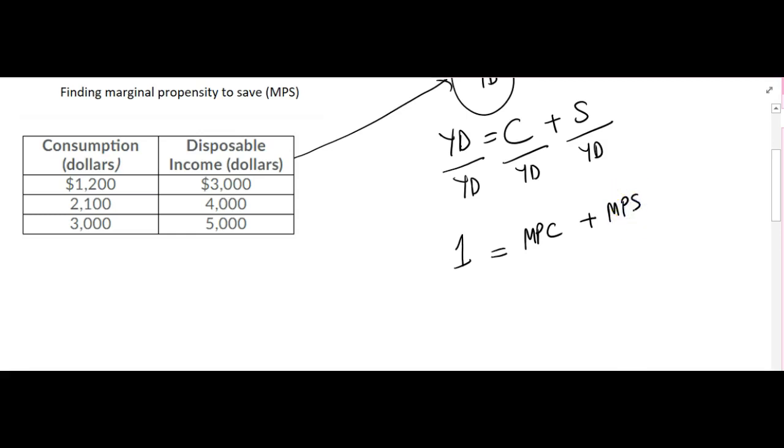So the question is asking about finding marginal propensity to save. How we're going to do that, we're going to use this identity and solve for MPS. What we're going to do is find out marginal propensity to consume and 1 minus that amount will give you the marginal propensity to save.